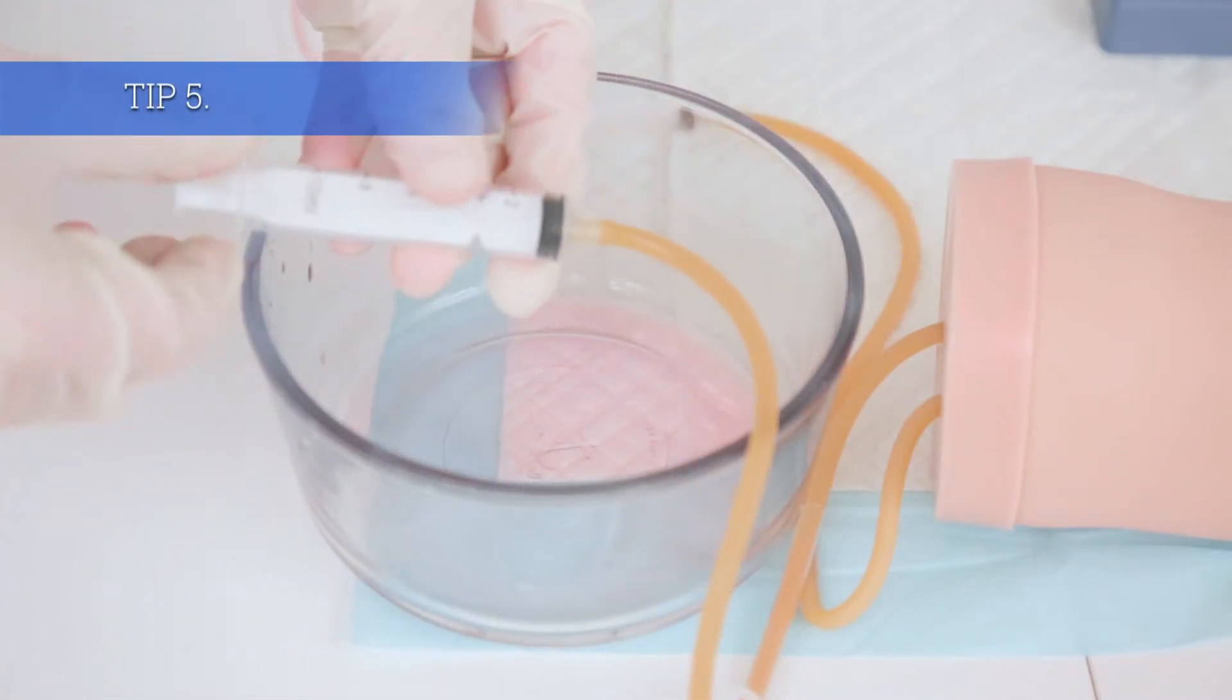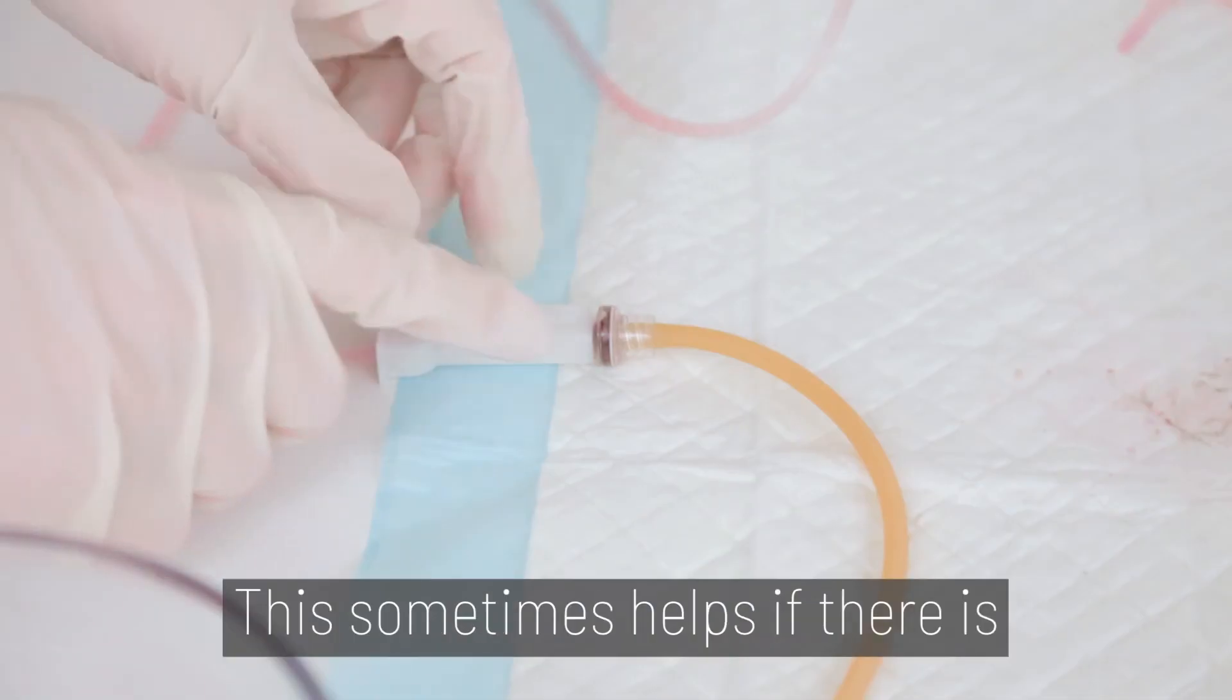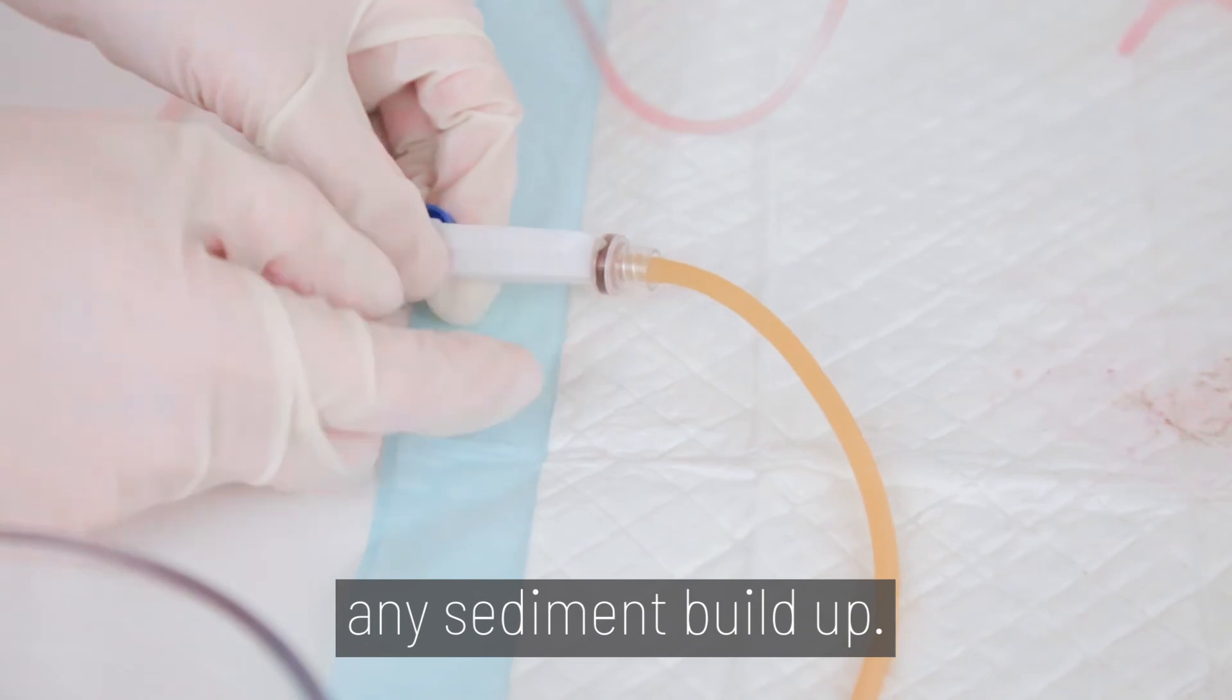Tip 5. You can also connect a syringe to the inlet or outlet tube to draw or pump blood through the model. This sometimes helps if there is any sediment buildup.